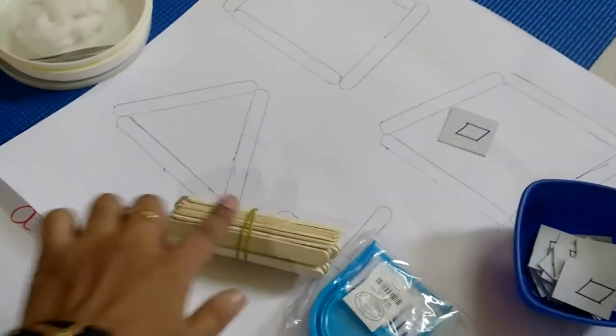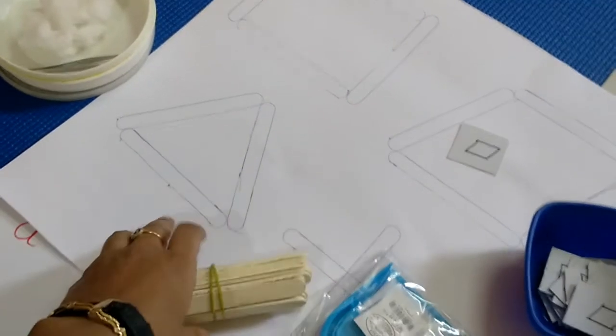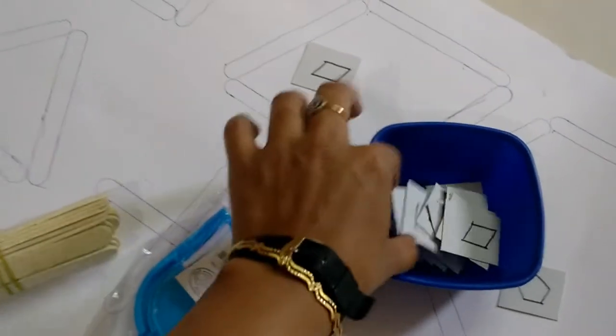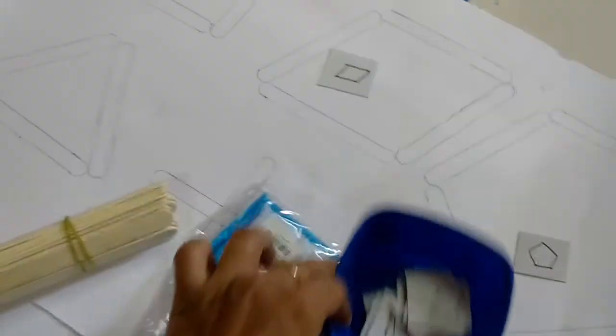This is chart paper where I have traced the popsicle sticks. The activity is to match the sticks and form the shapes. I have hand-drawn some shapes, and the activity is to sort the shapes and put them inside their respective shapes.